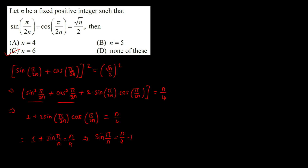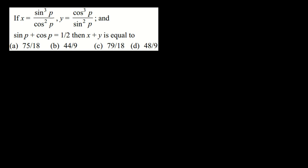If you put random values like n = 4 or n = 5, those values will not satisfy this equation, whereas n = 6 does satisfy it. Therefore our answer is n = 6.